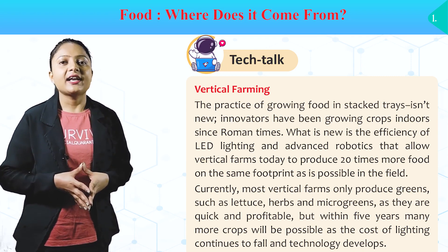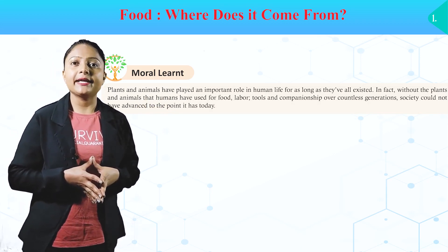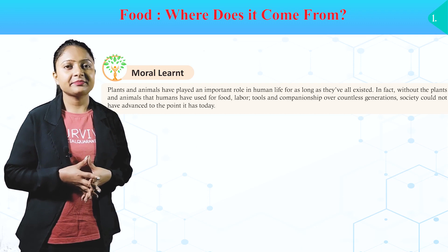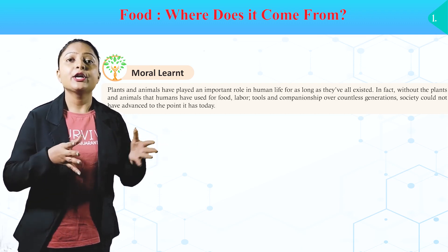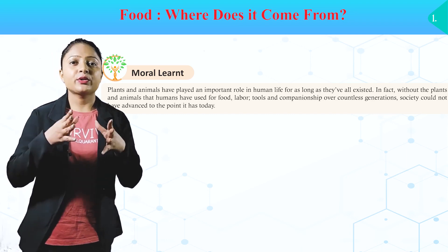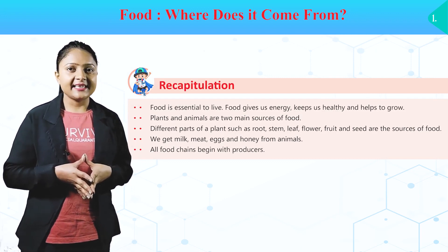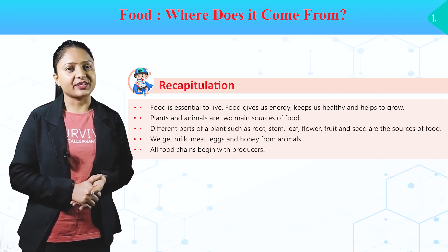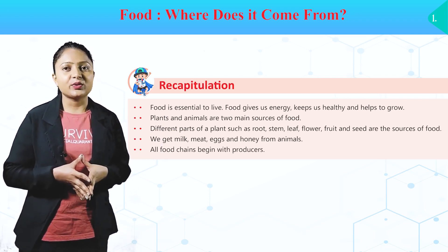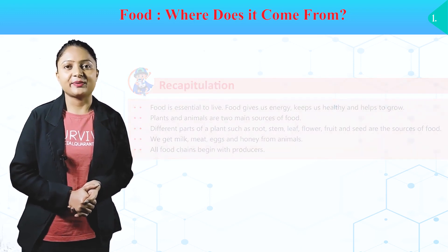Plants and animals have played an important role in human life. Without the plants and animals that humans have used for food, labor, tools and companionship over countless generations, society could not have advanced to the point it has today. Recapitulation: Food is essential to live. Food gives us energy, keeps us healthy and helps us grow. Plants and animals are two main sources of food. Different parts of plants such as roots, stems, leaves, flowers, fruits and seeds are sources of food. We get milk, meat, eggs and honey from animals. All food chains begin with producers. Thank you students.